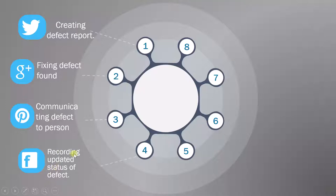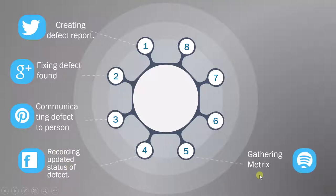After that, you have to do a recording of the updated status of the defect — you have fixed the defect so you update its status to fixed and move to the next stage. Then you have to gather the metrics as well, like how many defects are fixed, how many defects are yet to be fixed, and how much time they will take. So all those metrics you have to gather.